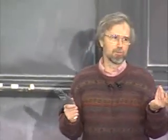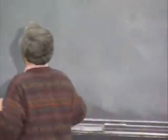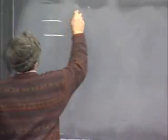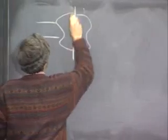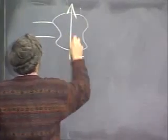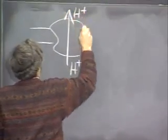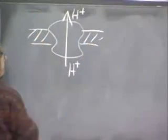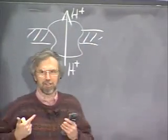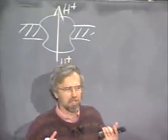I talked last lecture about another principle which must have come up very, very early in evolution. It's used by all organisms, and that's the principle of capturing the energy that's inherent in a proton gradient across a membrane. The way it worked was that the cell would have something in its membrane that would be a proton pump. It would pump the proton from one side of the membrane to the other, working against the gradient.